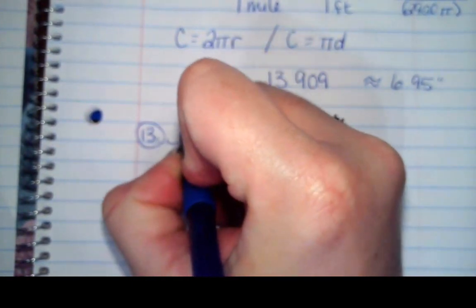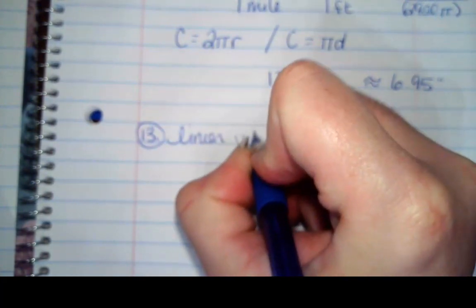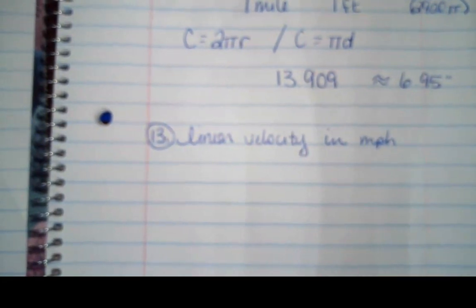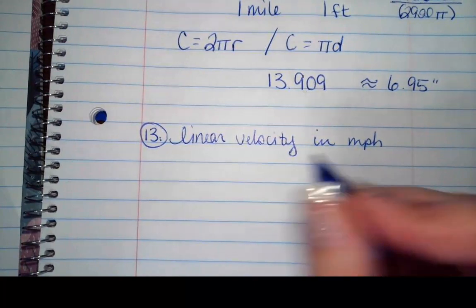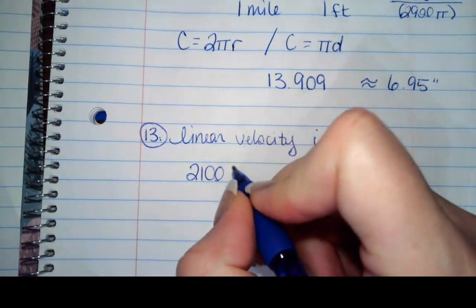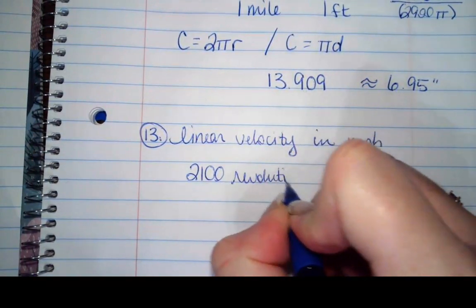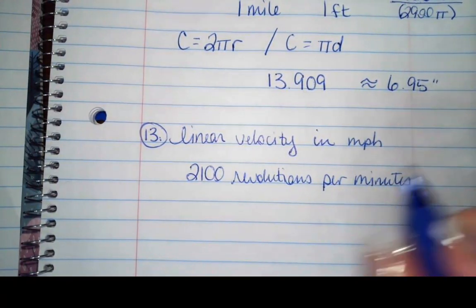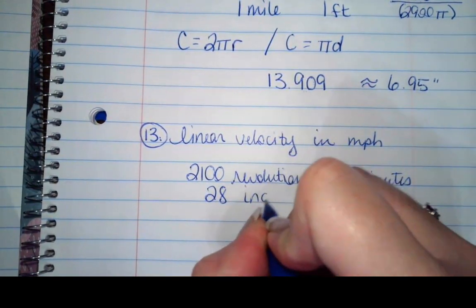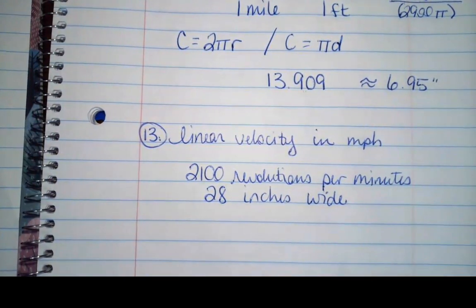So the next example that we've got is I want the linear velocity in miles per hour. Sorry, my little document camera is getting old and tired. There we go. Linear velocity in miles per hour of the tip of a lawnmower blade traveling at 2,100 revolutions per minute that cuts a swath that is 28 inches wide.